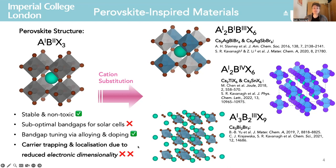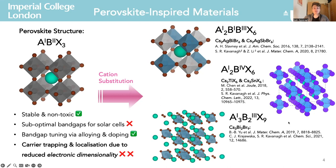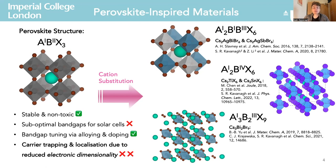By electronic dimensionality we mean essentially the mobilities of electrons and holes in the material. For example, in this vacancy-ordered perovskite you can see that we have isolated octahedra and effectively a zero-dimensional crystal structure, which gives low carrier mobilities. Reduced electronic dimensionality often favours carrier localisation and trapping, which severely impedes solar cell performance and contributes to the relatively low efficiencies achieved thus far.